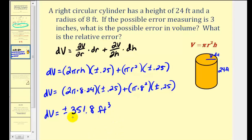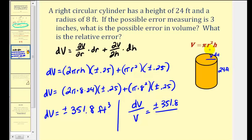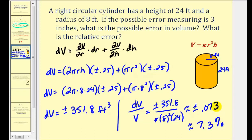To get an idea of whether this is acceptable or not, we need to determine the relative error. The relative error would be the ratio of differential v to the true volume — so we'd have plus or minus 351.8 divided by the true volume, which is pi r squared h, giving us pi times 8 squared times 24. This gives us approximately plus or minus 0.073, which means our approximate relative error is plus or minus 7.3%. If this is not an acceptable level of error, we're going to have to determine a better way of measuring both the radius and the height of the cylinder.